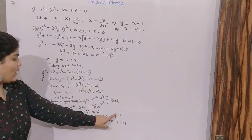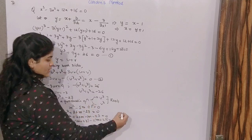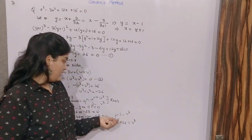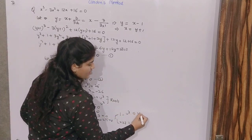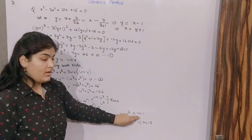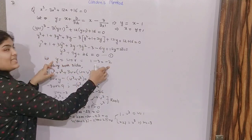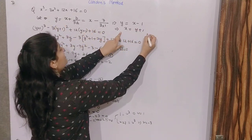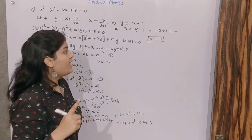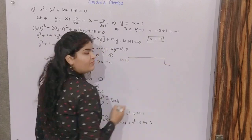So one root is 1 and the other is minus 27, but the roots we had taken were u³ and v³. So u³ = 1 and v³ = minus 27, which means u = 1 and v = minus 3. Then y = u + v = 1 minus 3 = minus 2. If y = minus 2, then x = y + 1 = minus 2 + 1 = minus 1. So x = minus 1 is one root, meaning (x+1) is one factor.